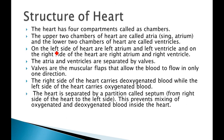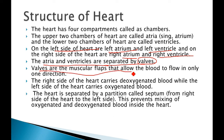The atria and ventricles are separated by walls. These walls are muscular flaps that allow blood to flow in only one direction — preventing backflow. For example, blood flowing downward will not reverse and flow back upward; the valves prevent that.